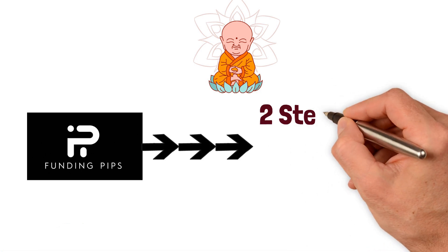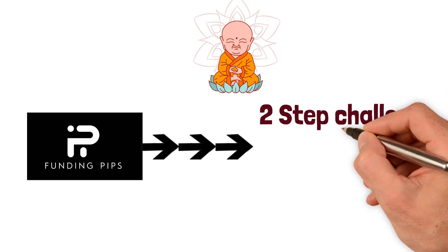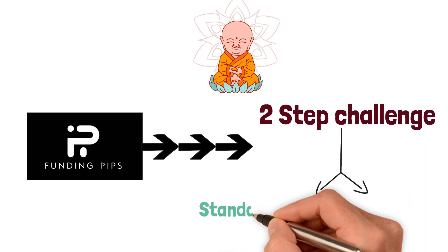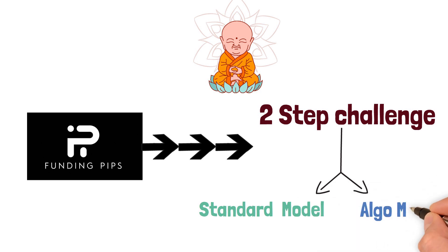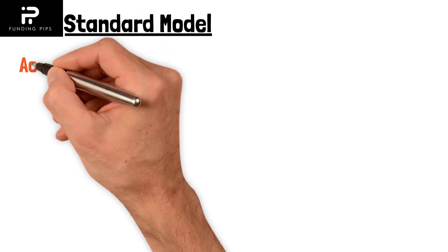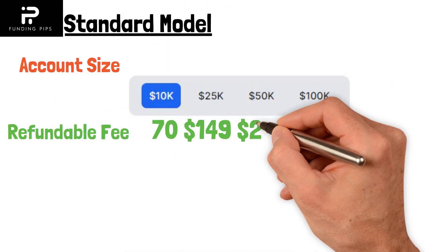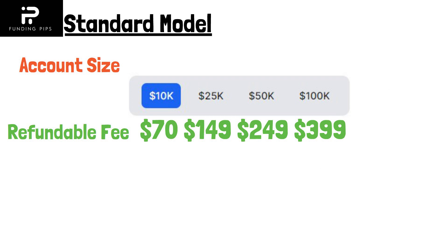Funding Pips provides two types of two-step challenges: one is the Standard model and another is the Algo model. The difference is in their trading style — depending on the trading style, there are two models. Let's first look at the Standard model. In the Standard model, these are the account sizes available and these are the refundable fees you have to pay in order to get access to the evolution account.